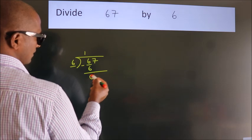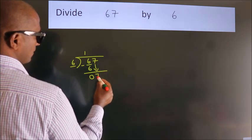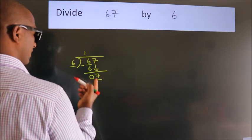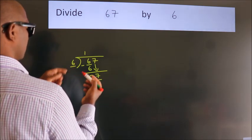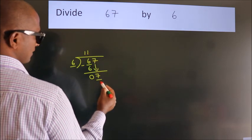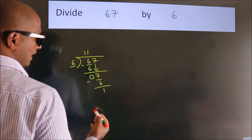After this, bring down the next number. So, 7 down. A number close to 7 in the 6 table is 6 ones, 6. Now we subtract. We get 1.